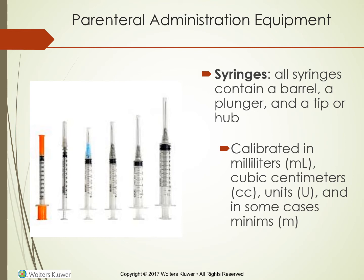All syringes contain a barrel, a plunger, and a tip or hub. They are calibrated in milliliters, cubic centimeters, units, and in some cases minims. Milliliters is abbreviated ml, cubic centimeters cc, units as capital U, and minims as small m.